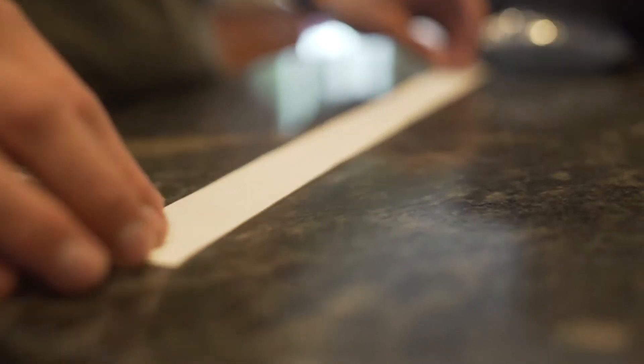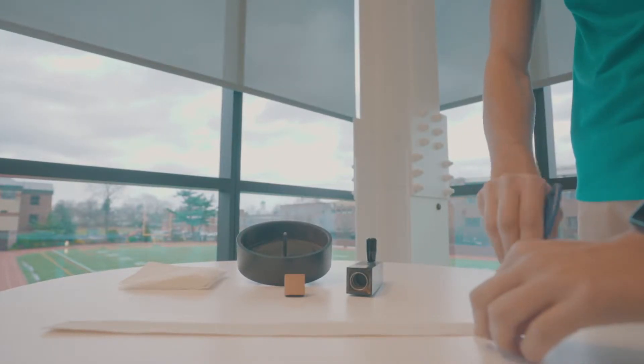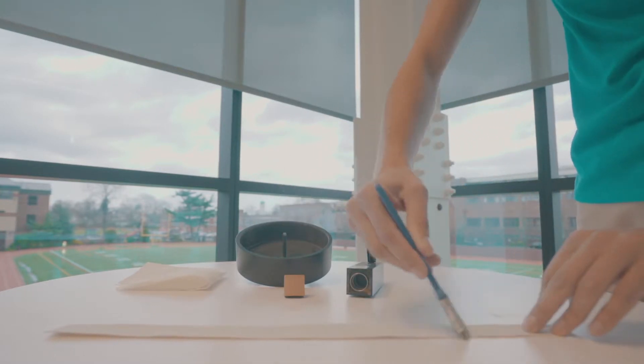Take the sandpaper and place it grit side up on a flat surface. Using a chip brush, completely brush the sanding strip from front to back as shown.